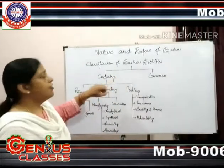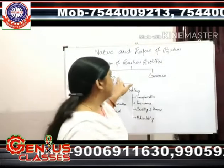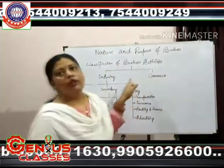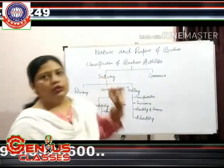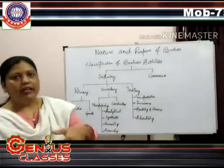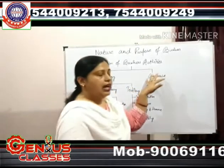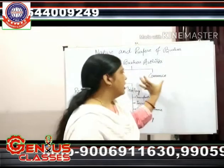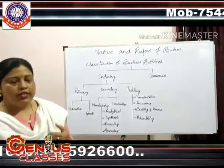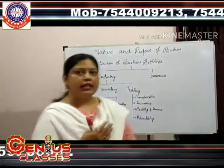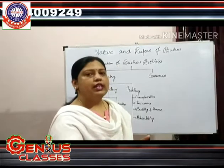Here, we classify business activities in two categories. One is industry and another one is commerce. Industry involves those activities which convert raw material into finished goods. Commerce refers to those activities which help directly or indirectly in the smooth functioning of the flow of goods in the market.